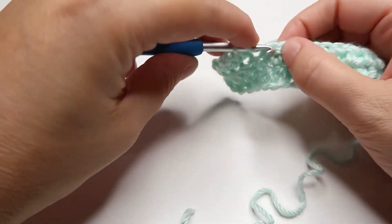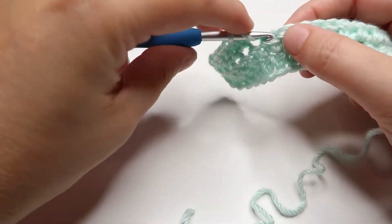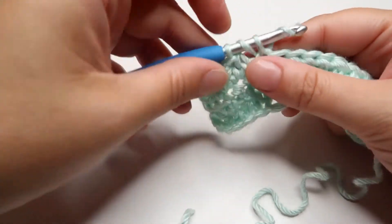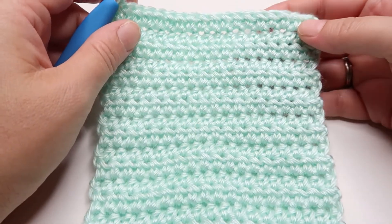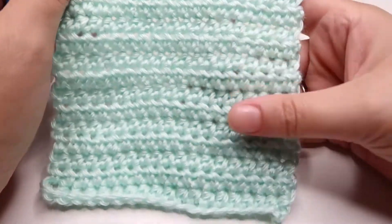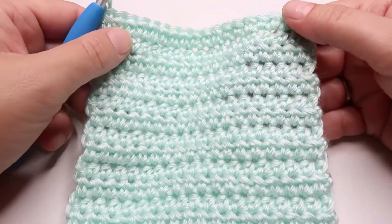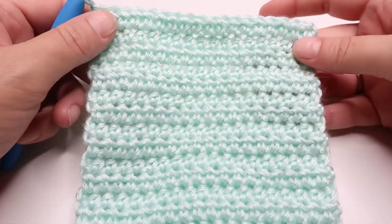For this swatch, I'm going to do 16 rows of half double crochets. That's a completed swatch of 16 rows of half double crochet, and each row has 18 stitches in it.